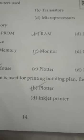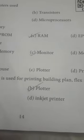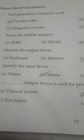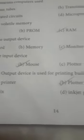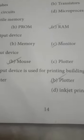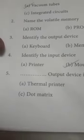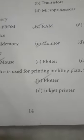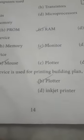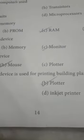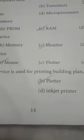The output device used for printing building plans, flash boards, etc., is the plotter. There is the thermal printer, dot matrix printer, plotter, and inkjet printer. Here is the plotter and inkjet printer.